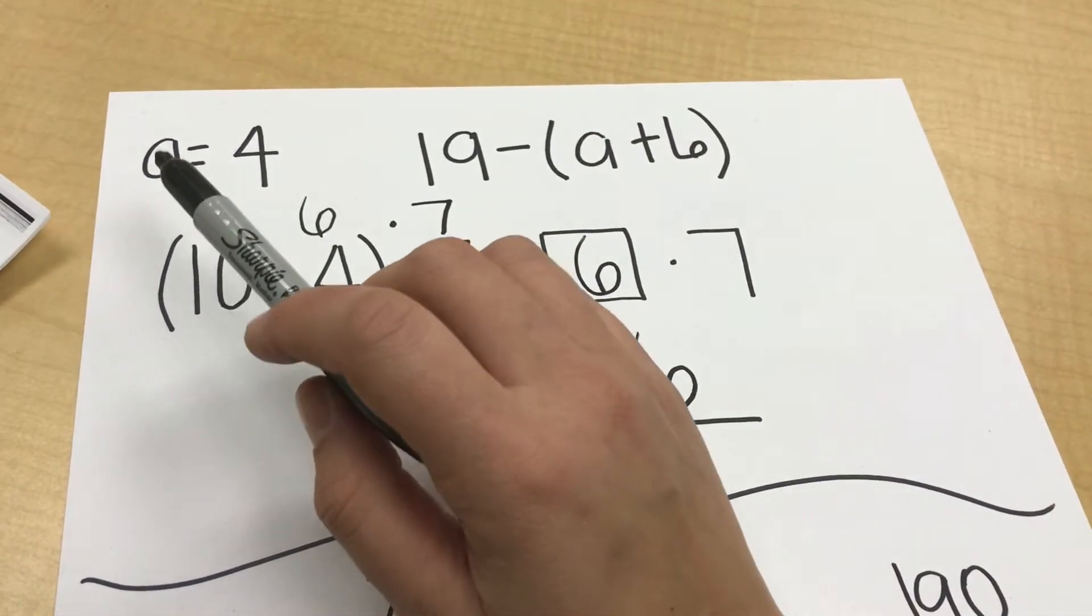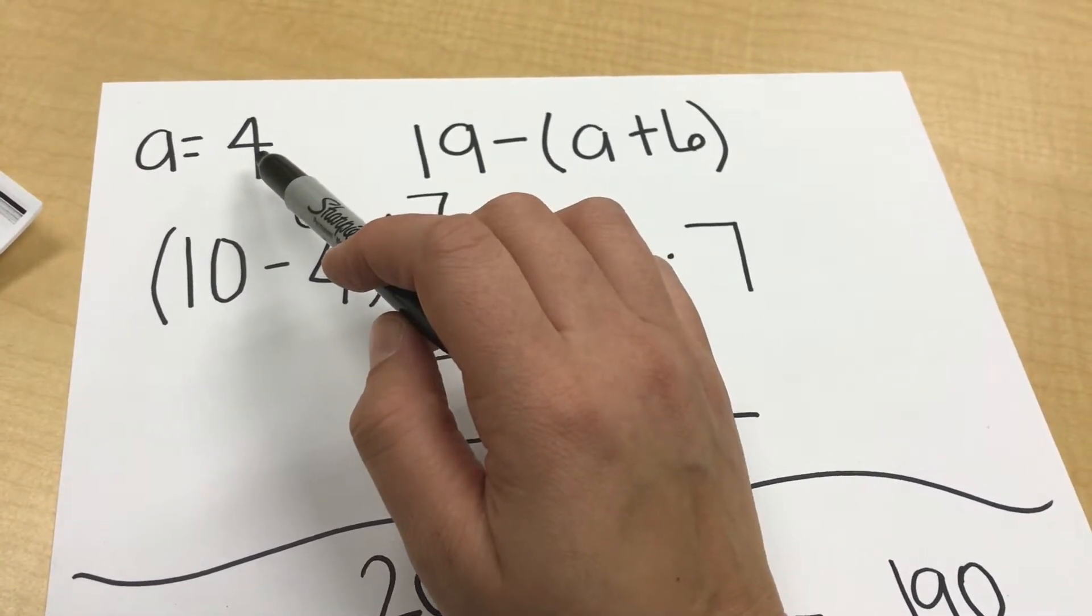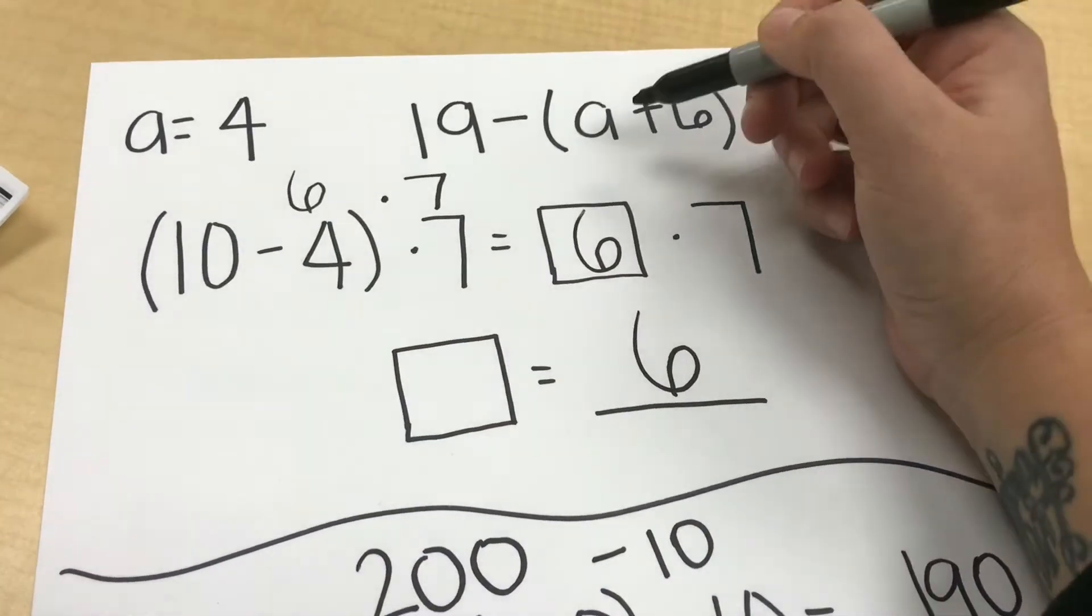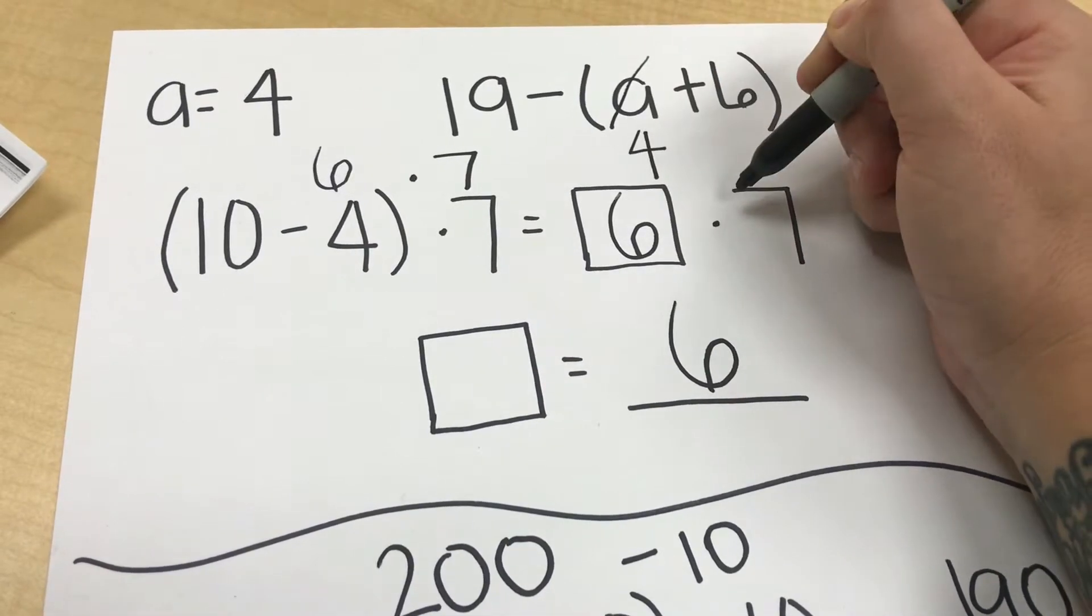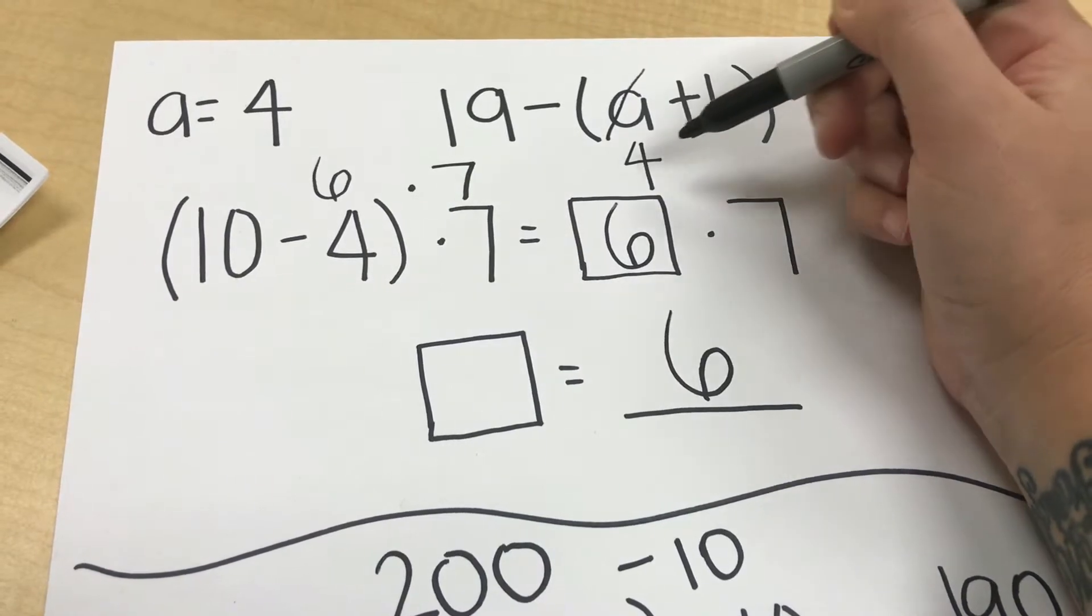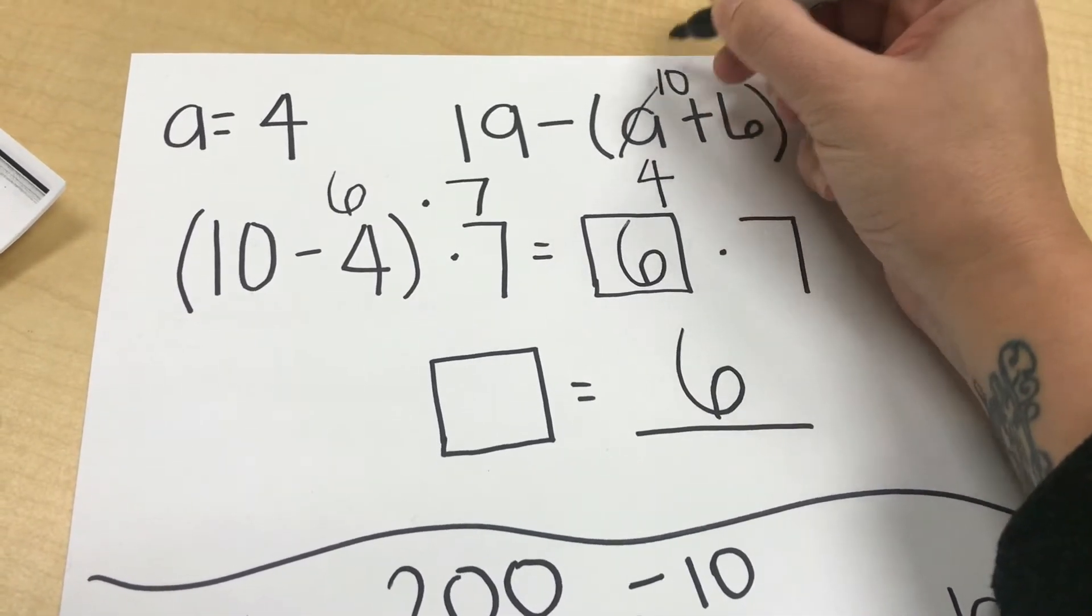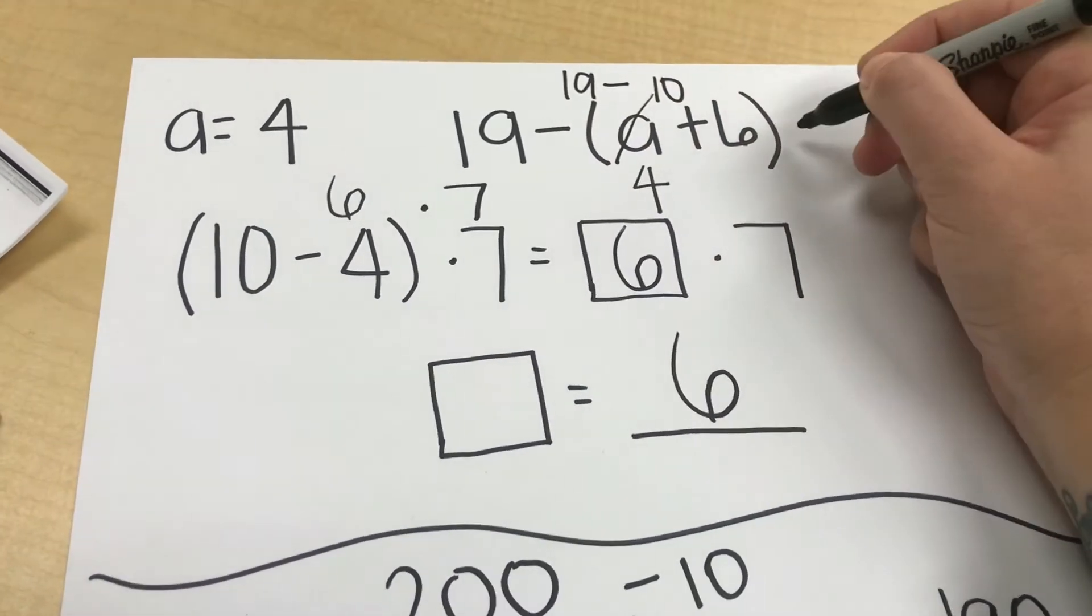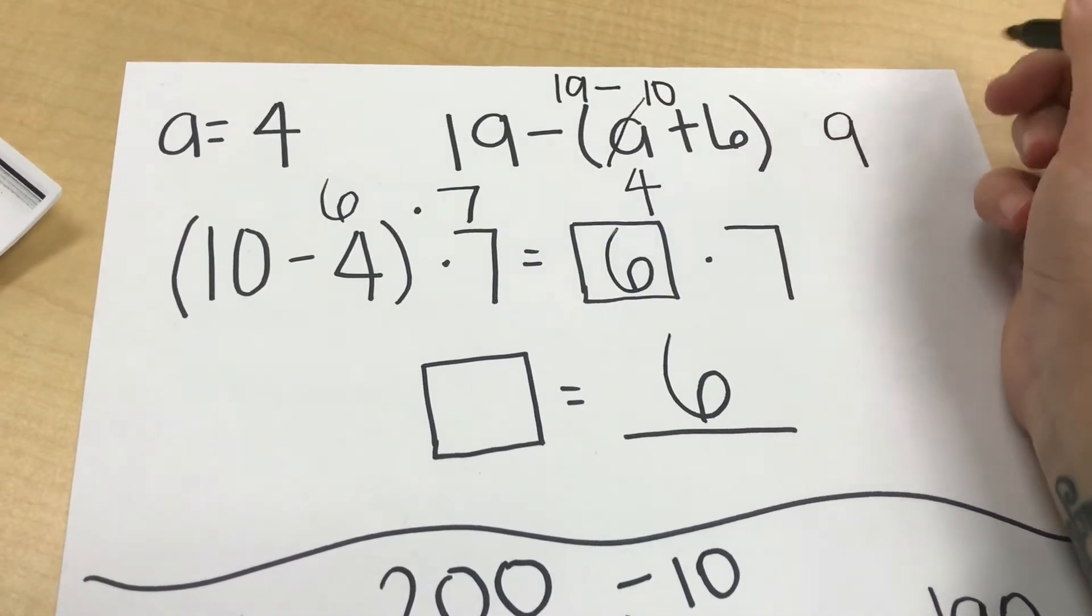Our last type of problem is taking a variable and replacing it with a value of some kind. In this case, anywhere you see an A, you are going to replace it with a 4. So I have the students cross out the A and replace it with a 4. And again, using PEMDAS, I know to work inside my parentheses first. So I have 4 plus 6, which equals 10. Now I can work outside of my parentheses. And that is 19 minus 10, which gives me an answer of 9.